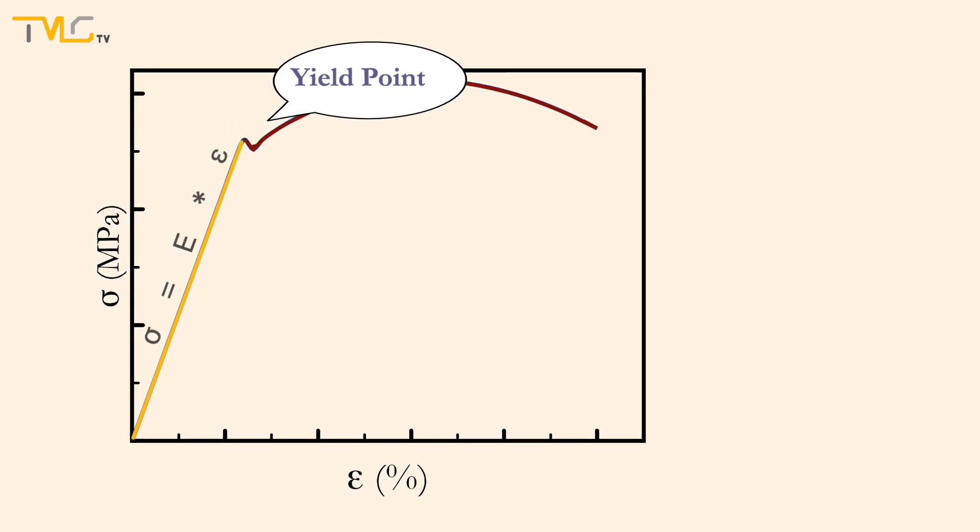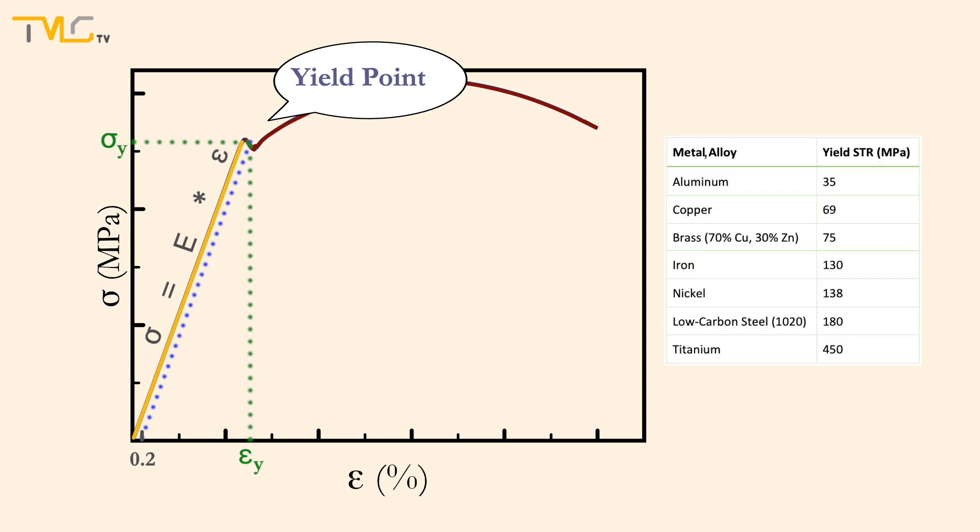A method developed to find the yield point is to draw a line parallel to the elastic region not starting from 0 strain point, but from 0.002 or 0.2% strain point. The point where the new parallel line intersects the stress-strain curve is denoted as the yield point. And the corresponding stress value for that point is reported as the yield strength of the material in MPa. And that point is an important material property used when selecting a material for a specific application.